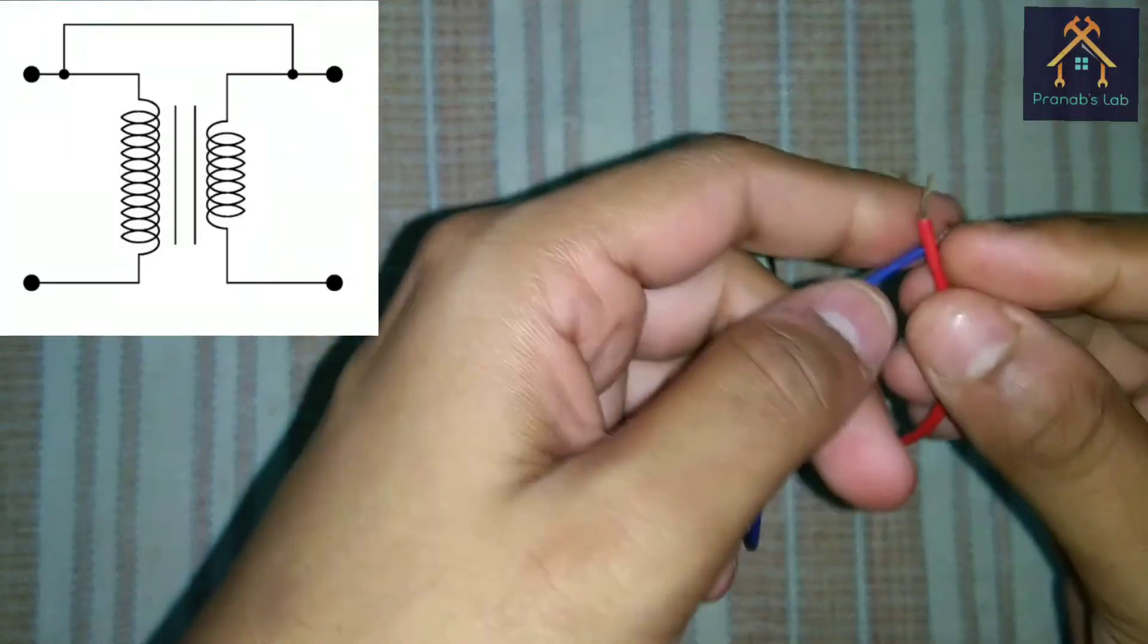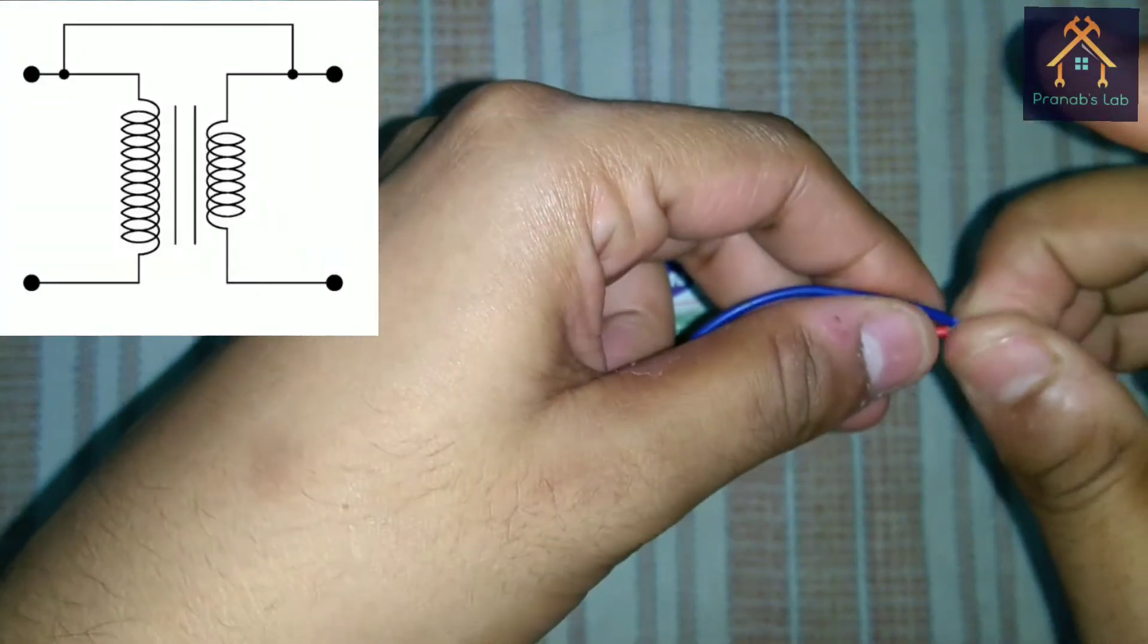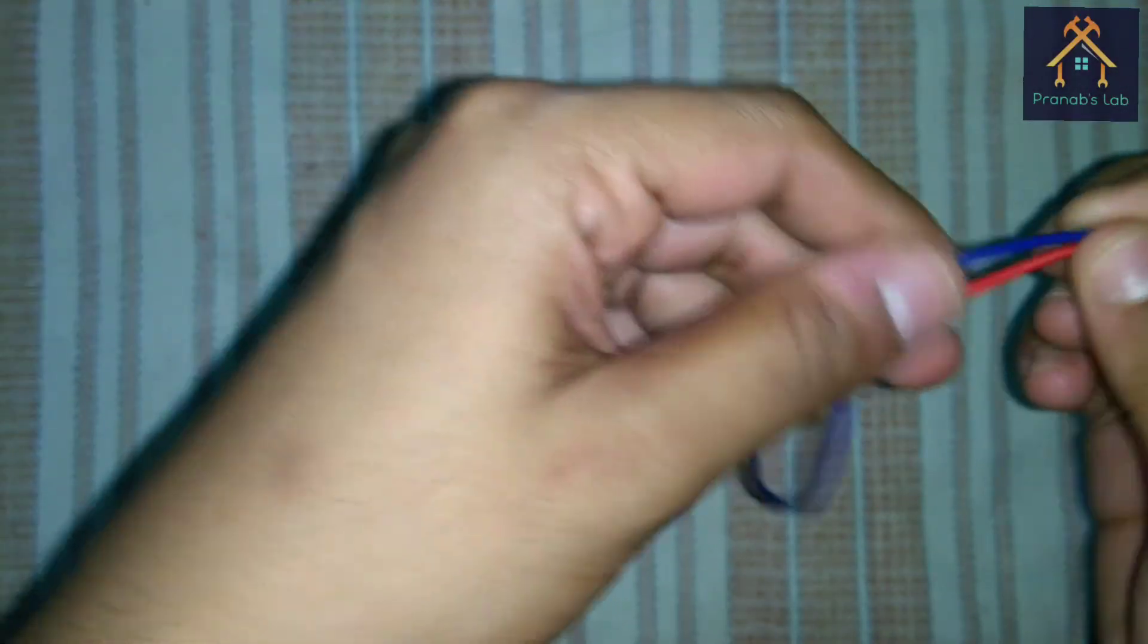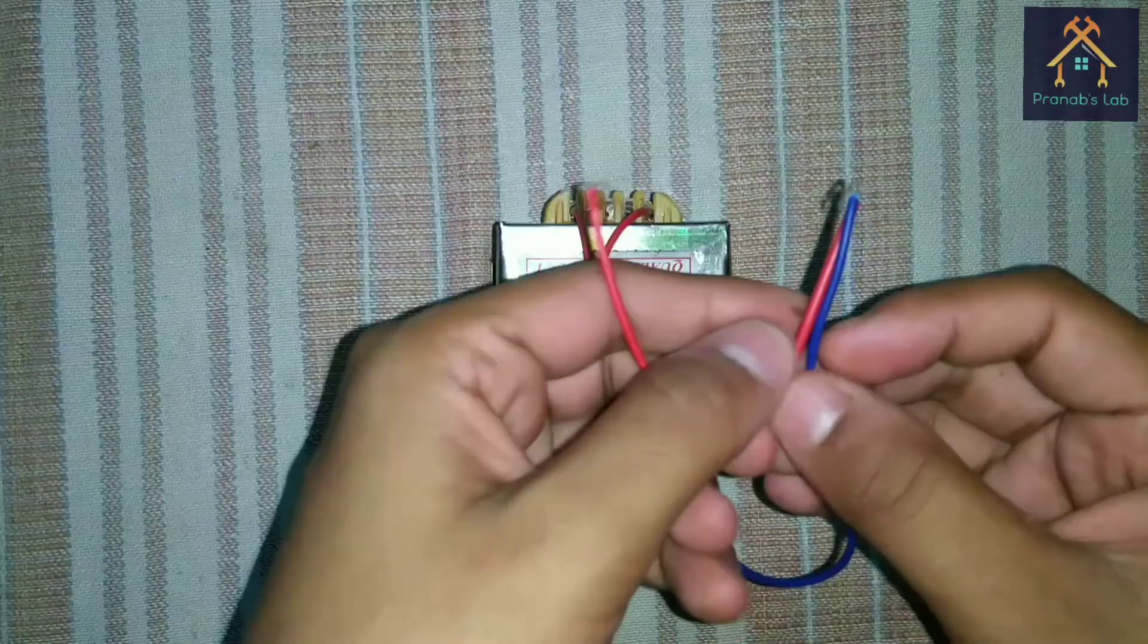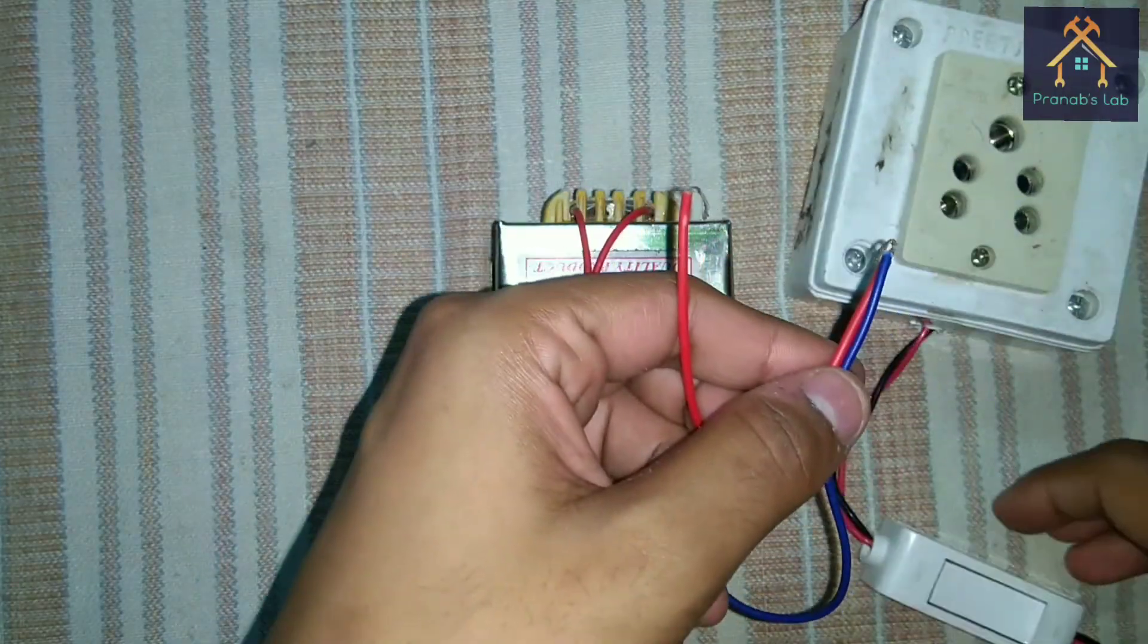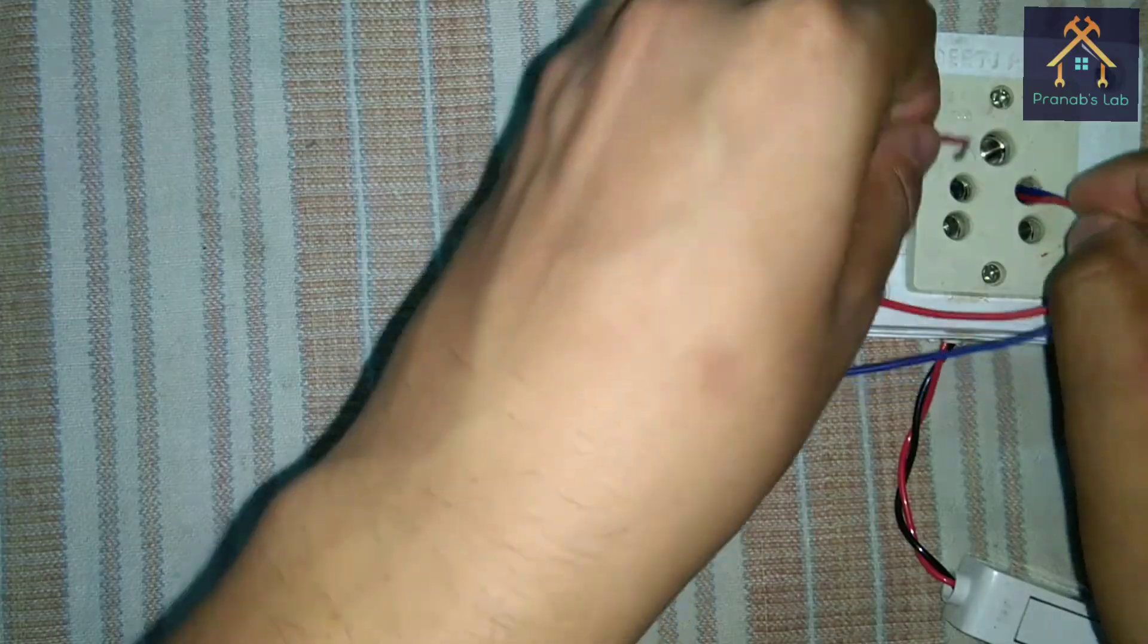First of all, we have to connect one terminal from primary and one from secondary as shown in figure. Now the primary winding is connected with supply main.